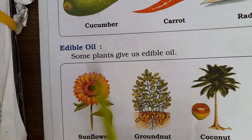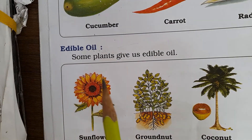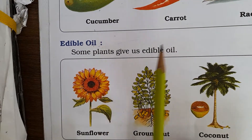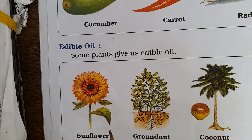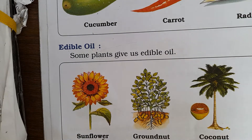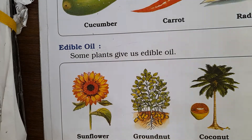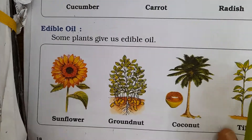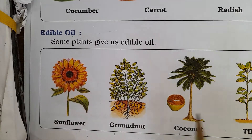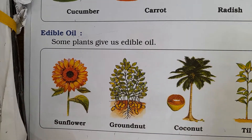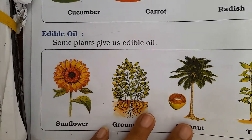Edible oil means cooking oil. Edible oil — what do we get? Sunflower, groundnut, coconut. We get cooking oil from these.